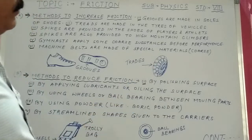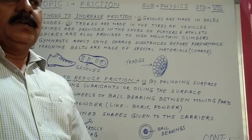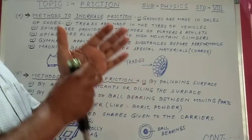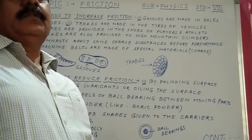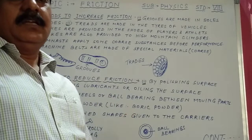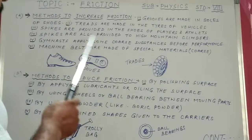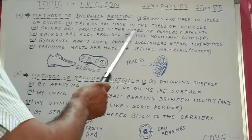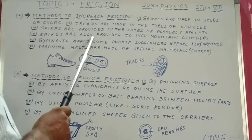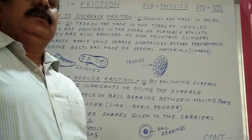Point three: spikes are provided in the shoes of players and athletes. Hockey players, football players, and athletes have shoes especially made with spikes below in the soles so that while they are running and playing, they can control their body with the help of high friction.